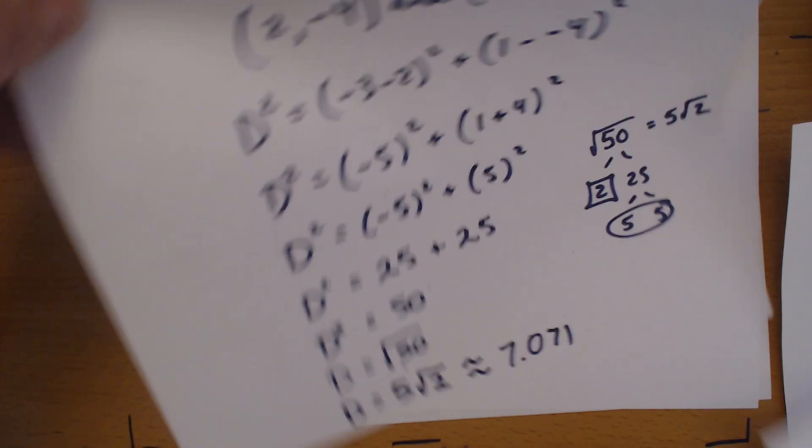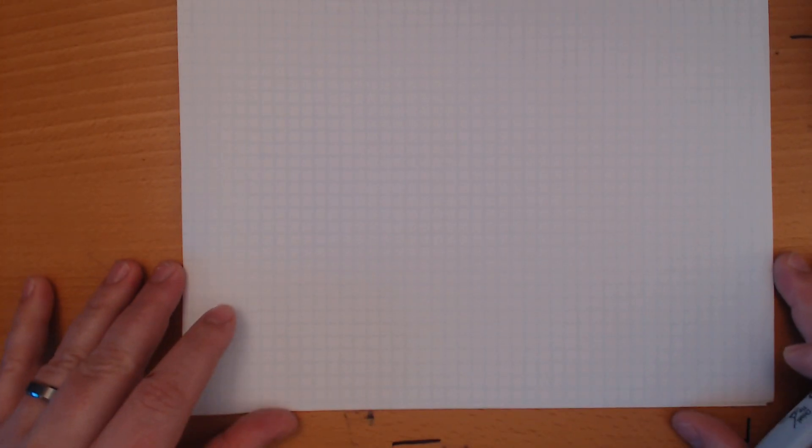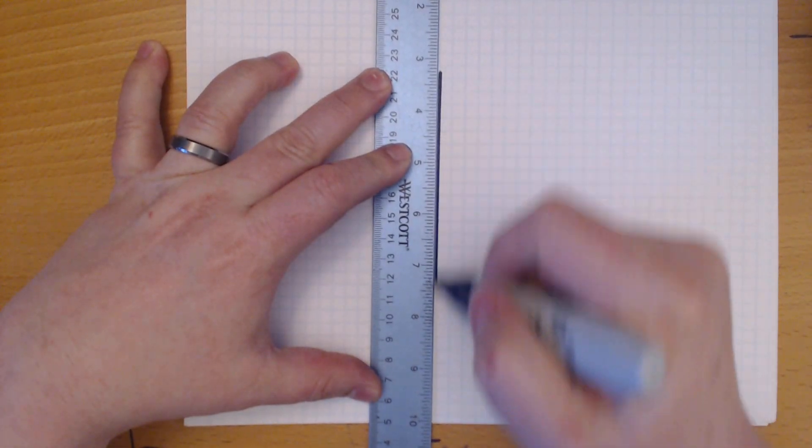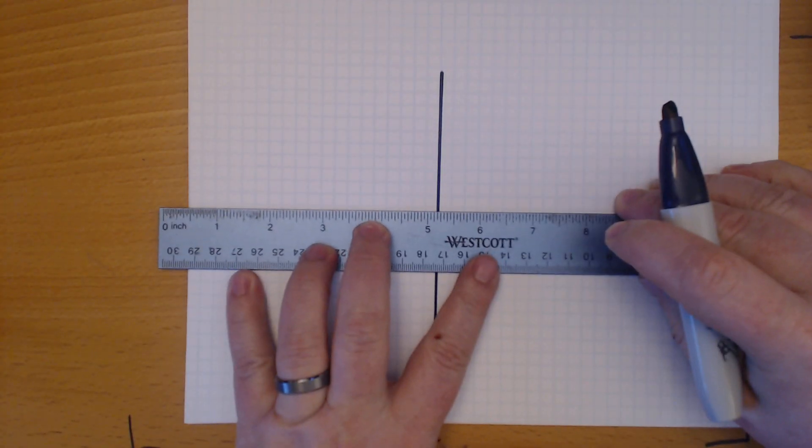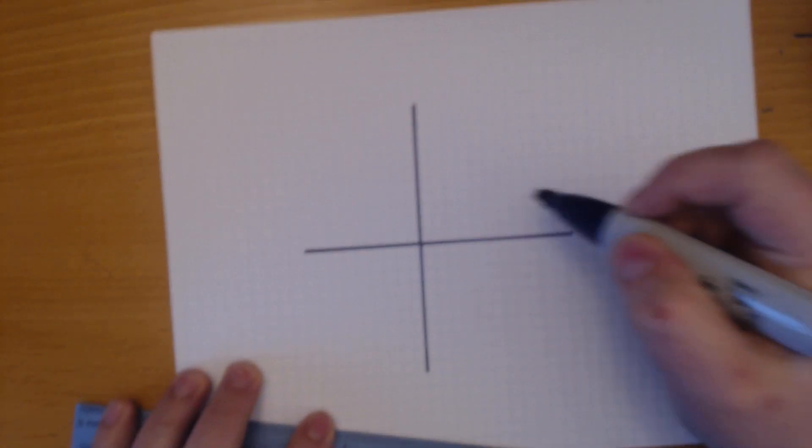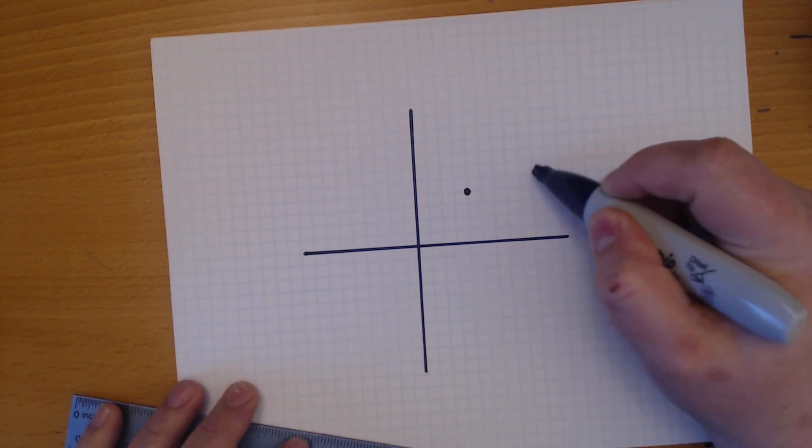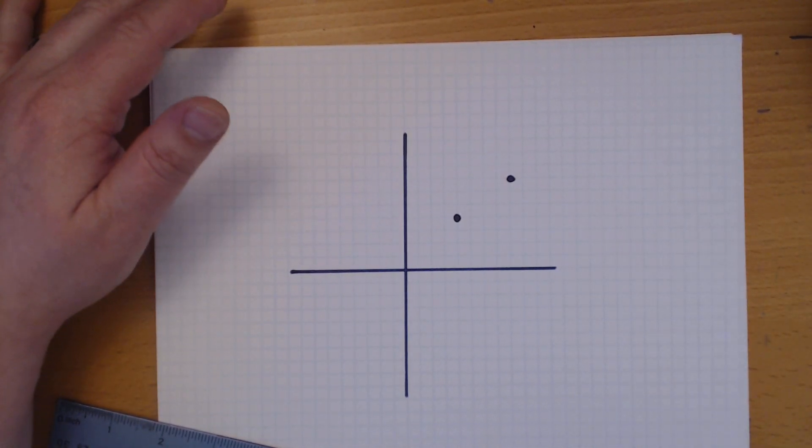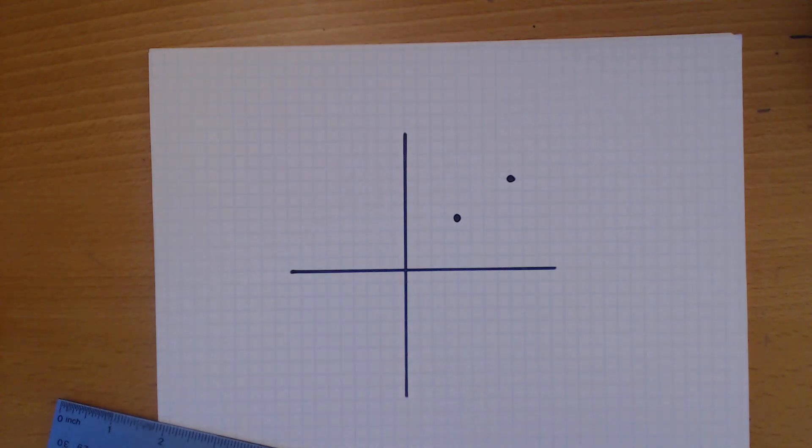Now, if you were doing this on a piece of graph paper, then the process is very similar. But it's even a little easier. So, first, let's do this. Let's take these points. Now, what we're going to do is we're going to walk and make a right triangle using the grid.